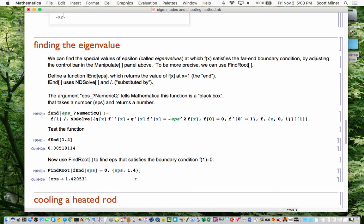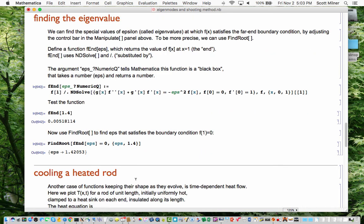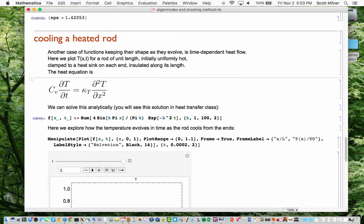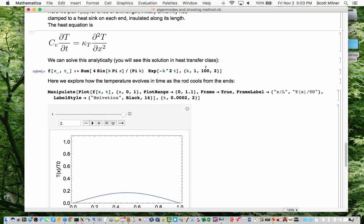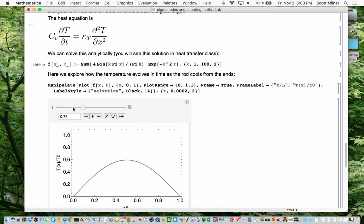Another example of a physical situation in which a function keeps its shape as it evolves in time arises in the study of time-dependent heat flow. So imagine that you have a rod initially hot and clamped between two heat sinks and insulated along its length.